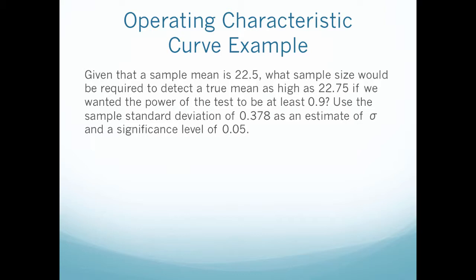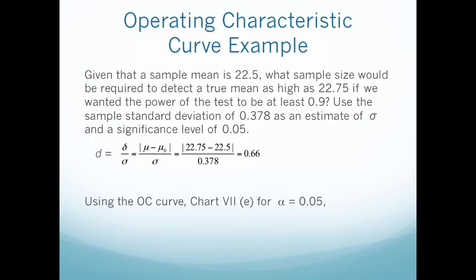Before we can actually go to the values and extract some sample size, we need to be able to solve for the values it asks for. First, on the x-axis of my operating characteristic curve, there's something called D. D is this formula where I have delta over sigma, meaning the difference in my means over sigma. So if I have a sample mean of 22.5 and I want to detect a mean as high as 22.75, I calculate that difference over 0.378 and I get 0.66. Then alpha is 0.05. So in your book, this would be on chart E, or chart 7 version E, given that alpha equals 0.05 and it's a two-sided test.